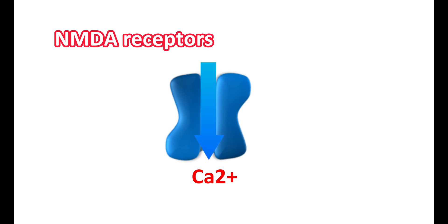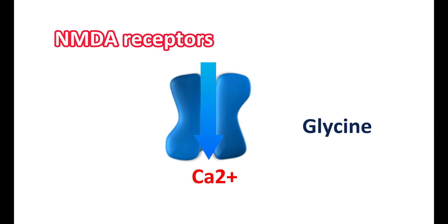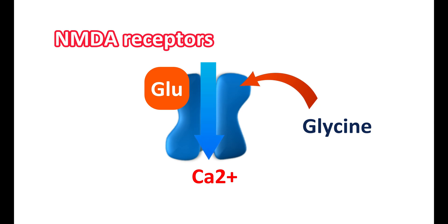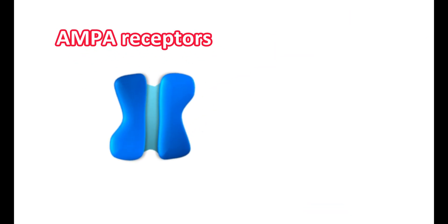The target membrane may be a neuron, muscle, or gland. However, NMDA receptors cannot be activated by glutamate alone — a small amount of glycine is also required. Glycine acts as an inhibitory neurotransmitter, so there is a notable coordination between glutamate and glycine. Glutamate binds to the glutamate binding site, while glycine binds to a separate site, and both are needed together for activation of NMDA receptors.